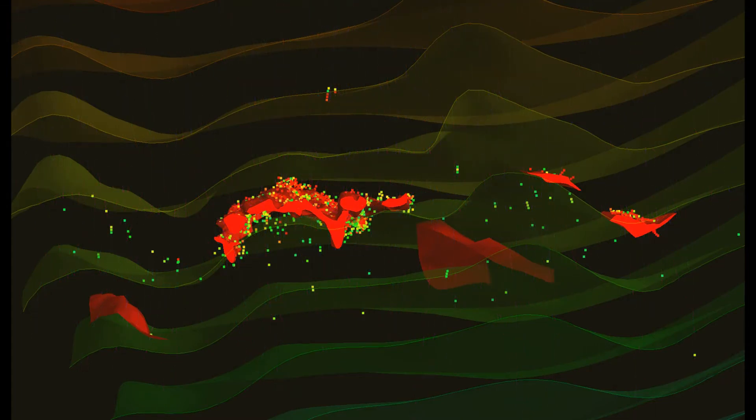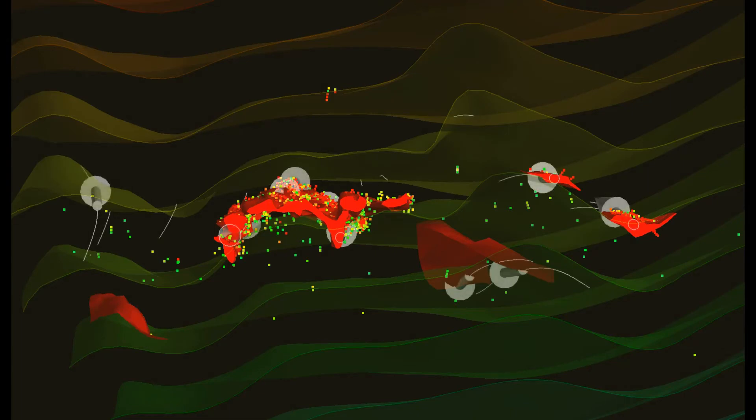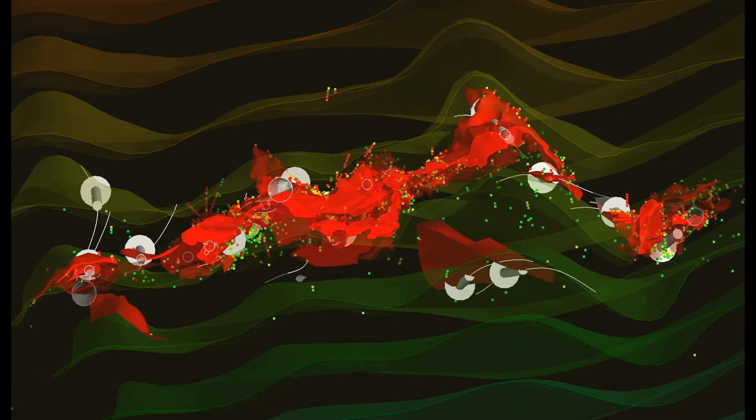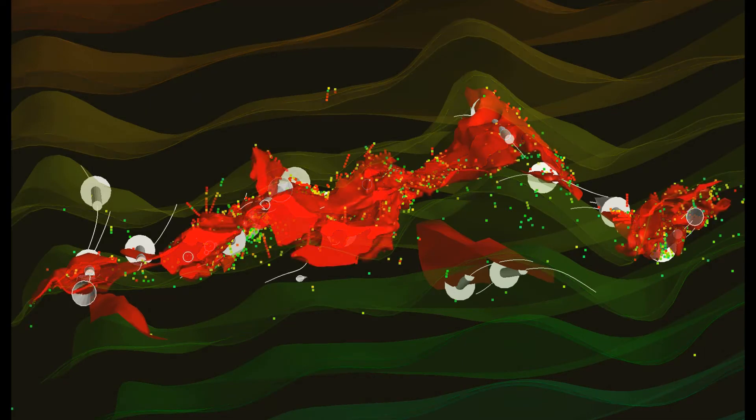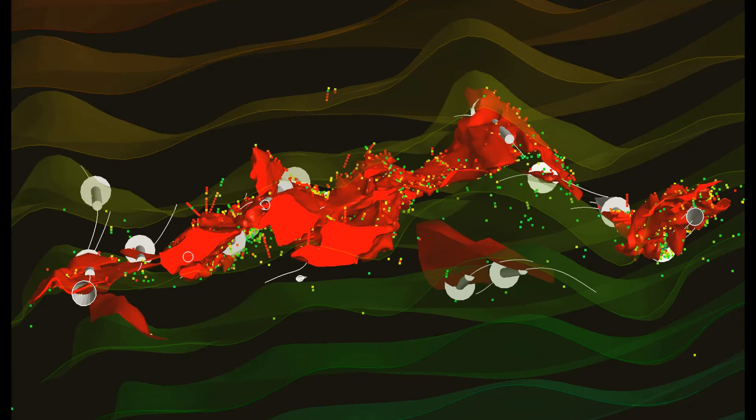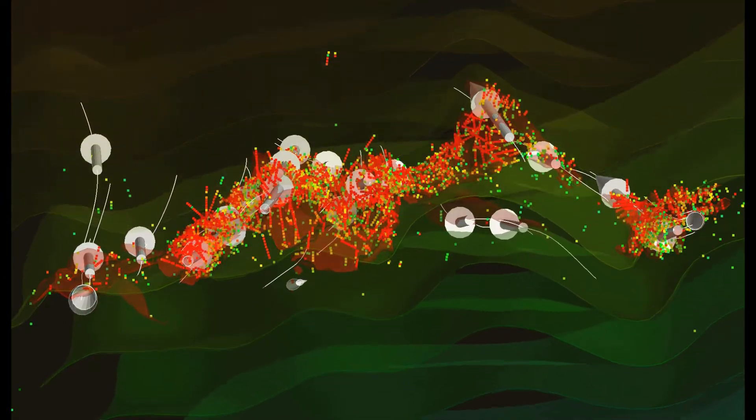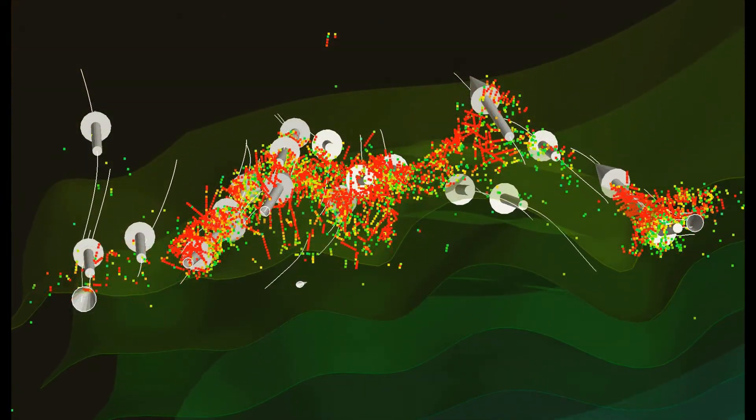Now we're looking at the zinc values, the high zinc values here along with the red ore wireframe, and these are the local fold axes and their interpolated trajectories in 3D that I've modeled from first interpreting the fold hinges and their locations from the wireframe, the ore wireframe, as well as the grade distribution.